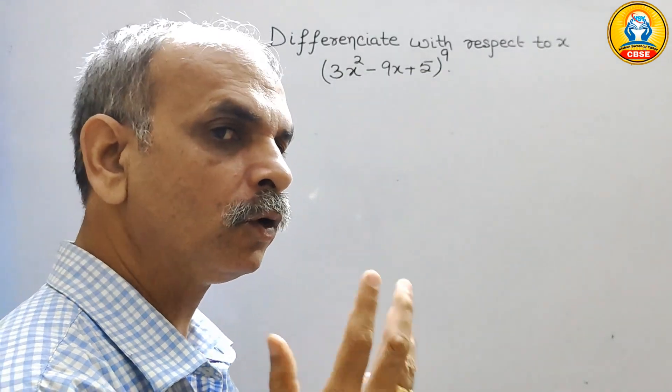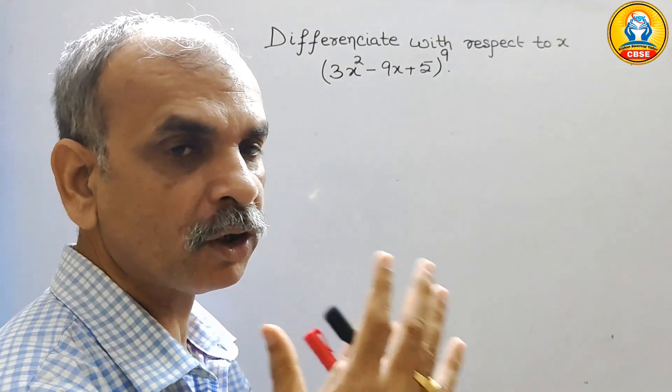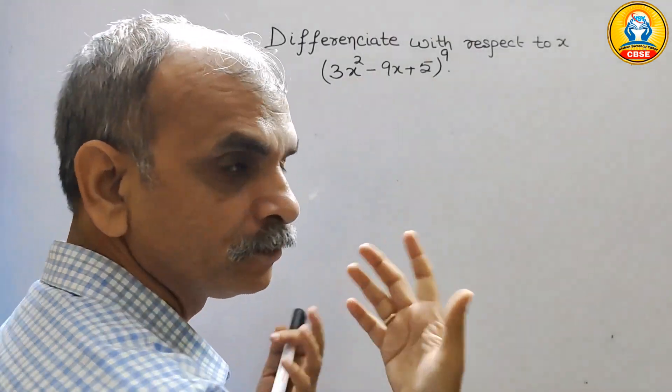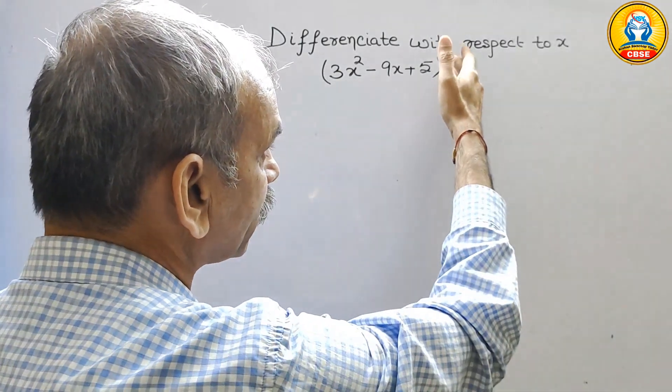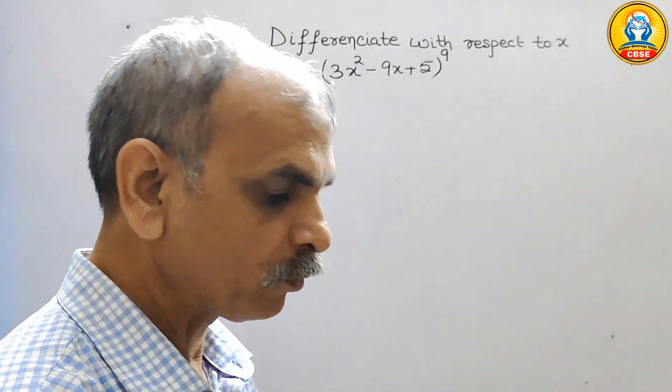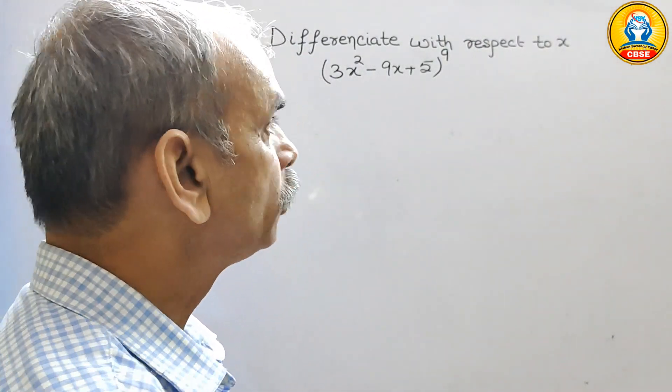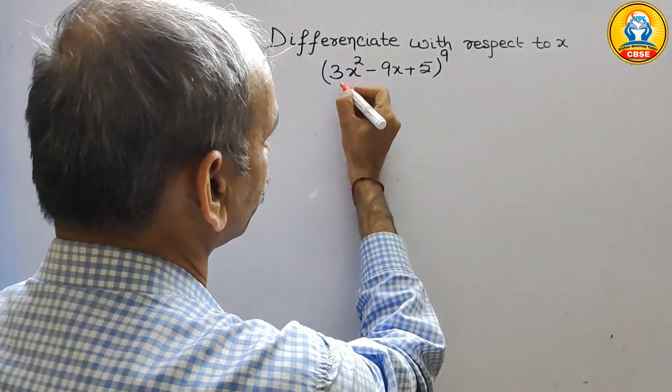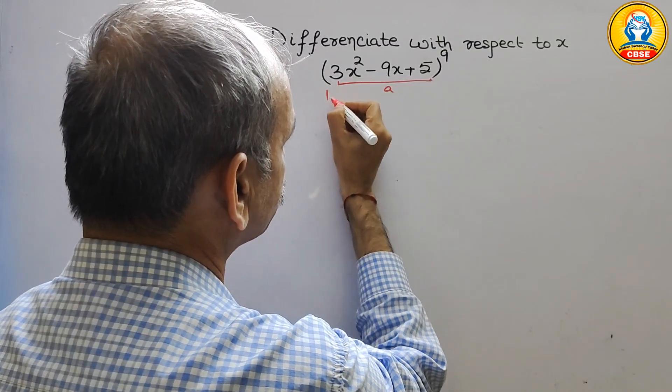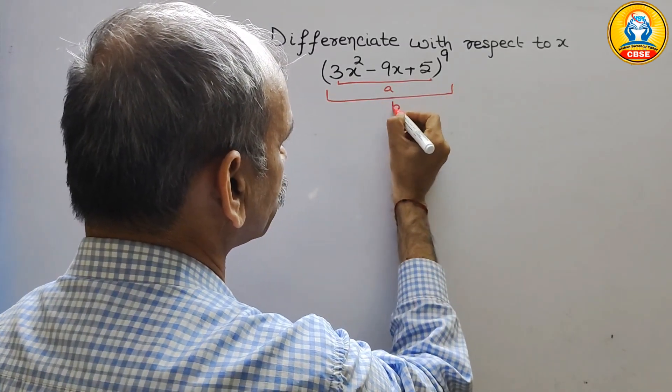So here we will go. This is the combination of two. So here first split it, and here is the power function also. So now what we will do - suppose this is your A and this plus the power, that is your B.